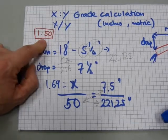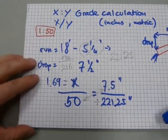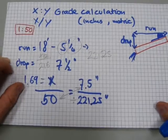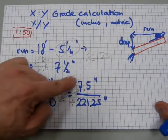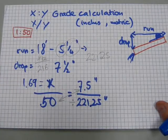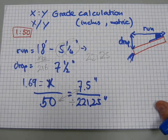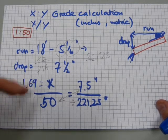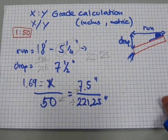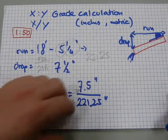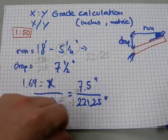So, the desired grade was 1 over 50. And what is actually built in this configuration with the 7.5 inch drop over a 221.25 inch run is 1.69 over 50. So, it's sloping a little more than requested. But that's the calculation.